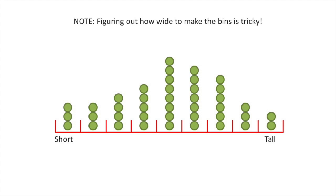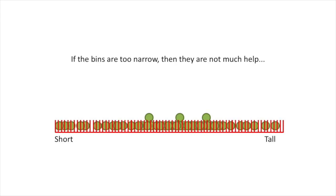Note, figuring out how wide to make the bins is tricky. If the bins are too narrow, then they are not much help. In this case, the bins are so narrow that pretty much every measurement gets its own bin. This doesn't give us much more insight than what we had before, so it's not very useful.